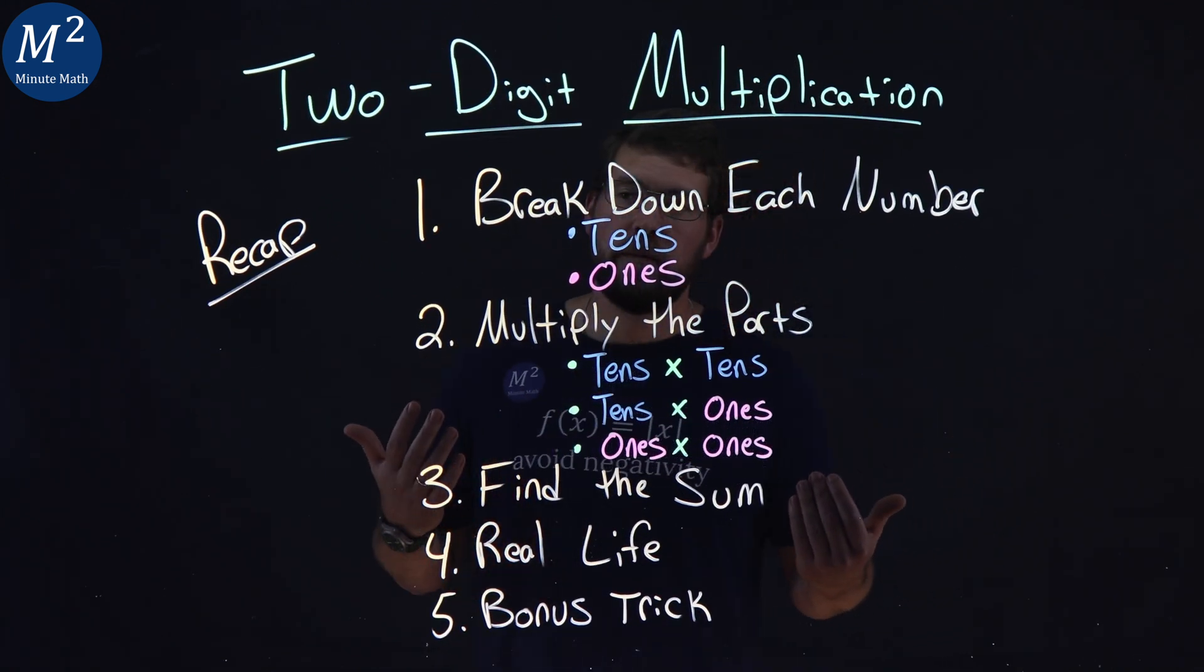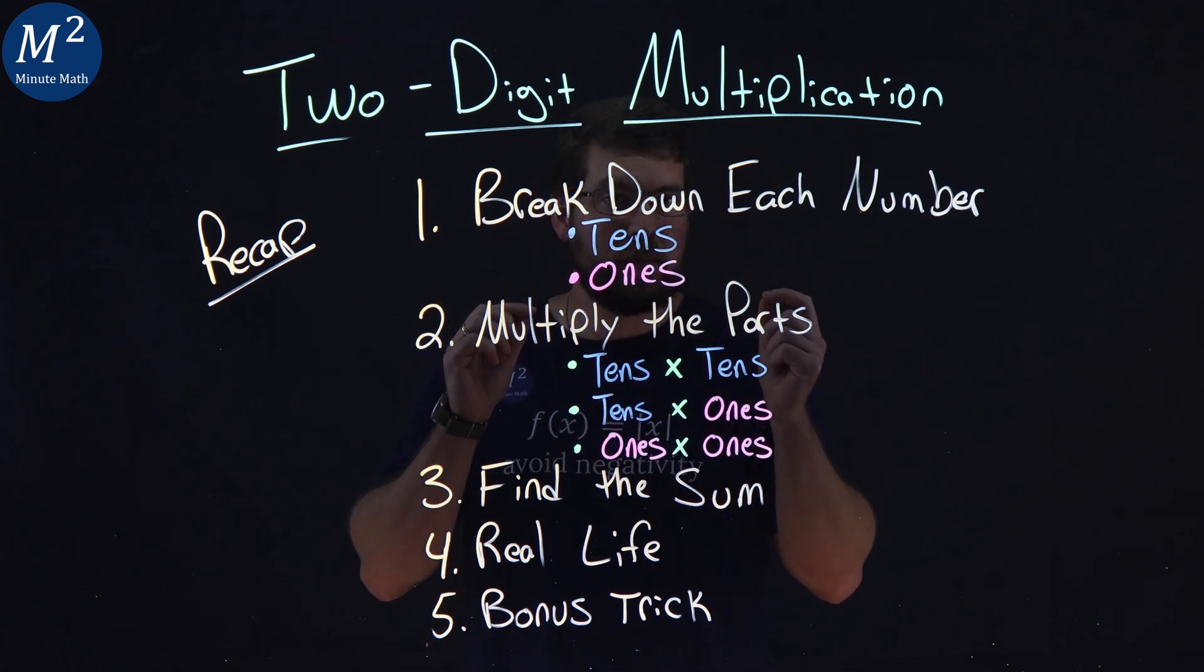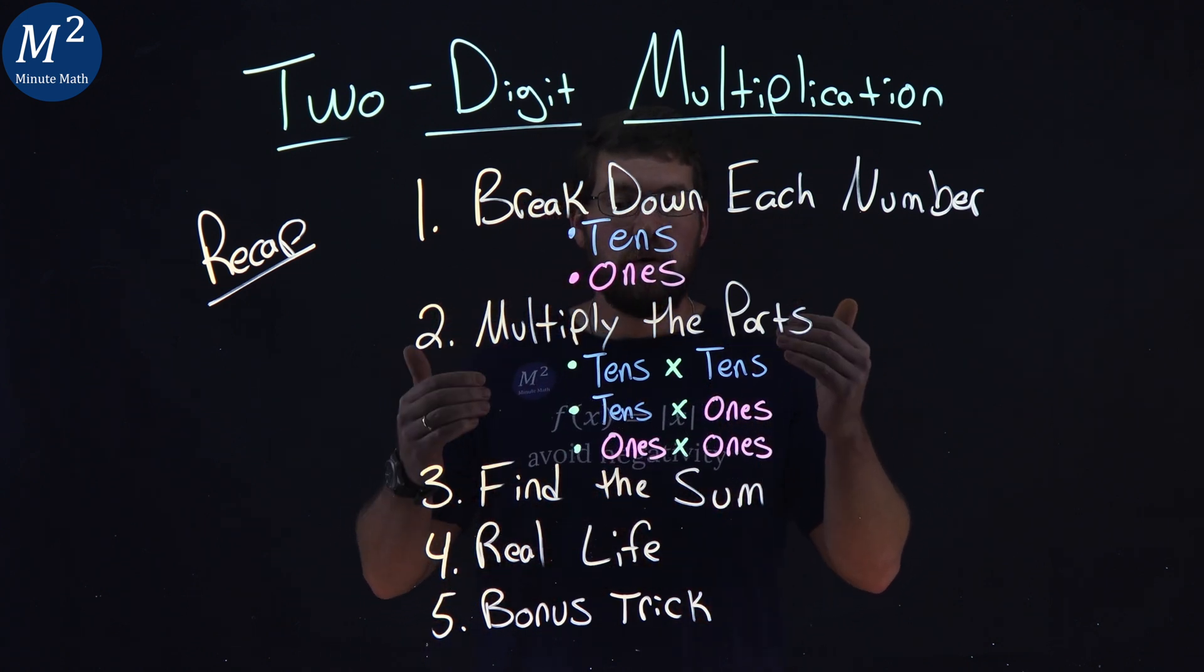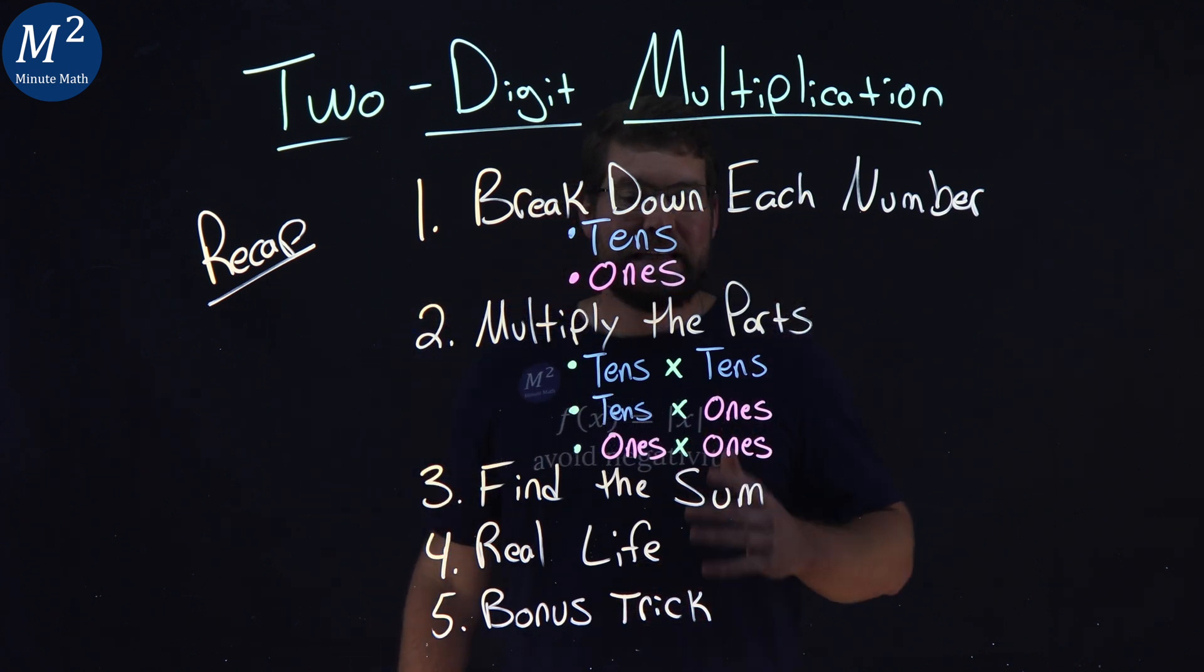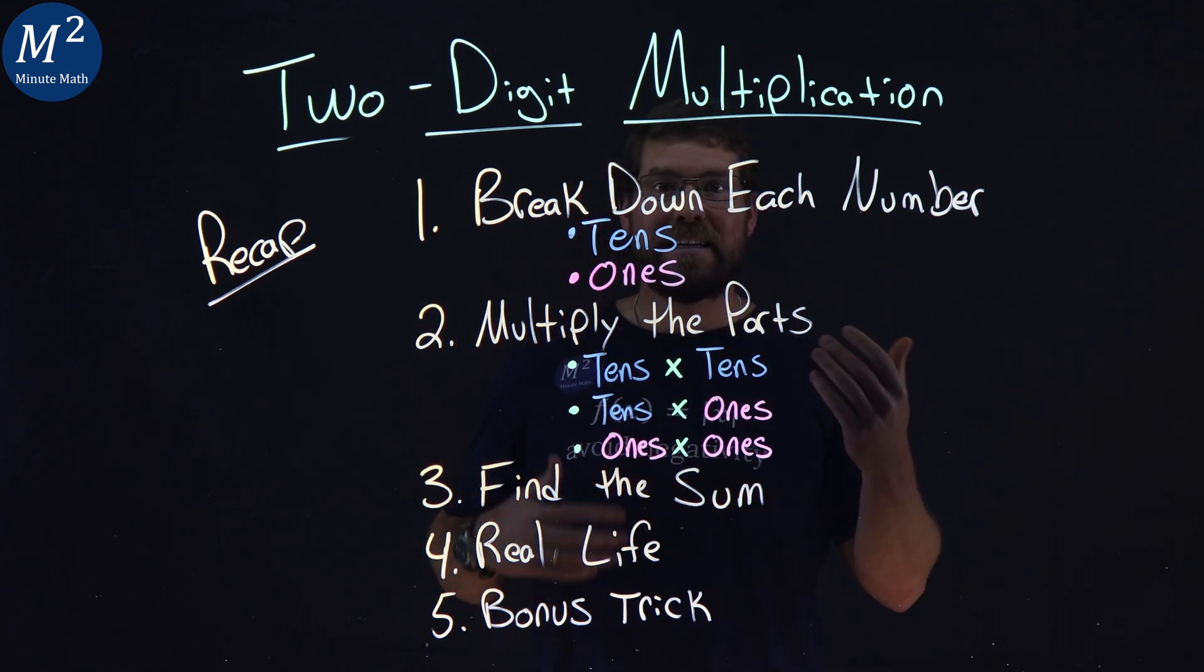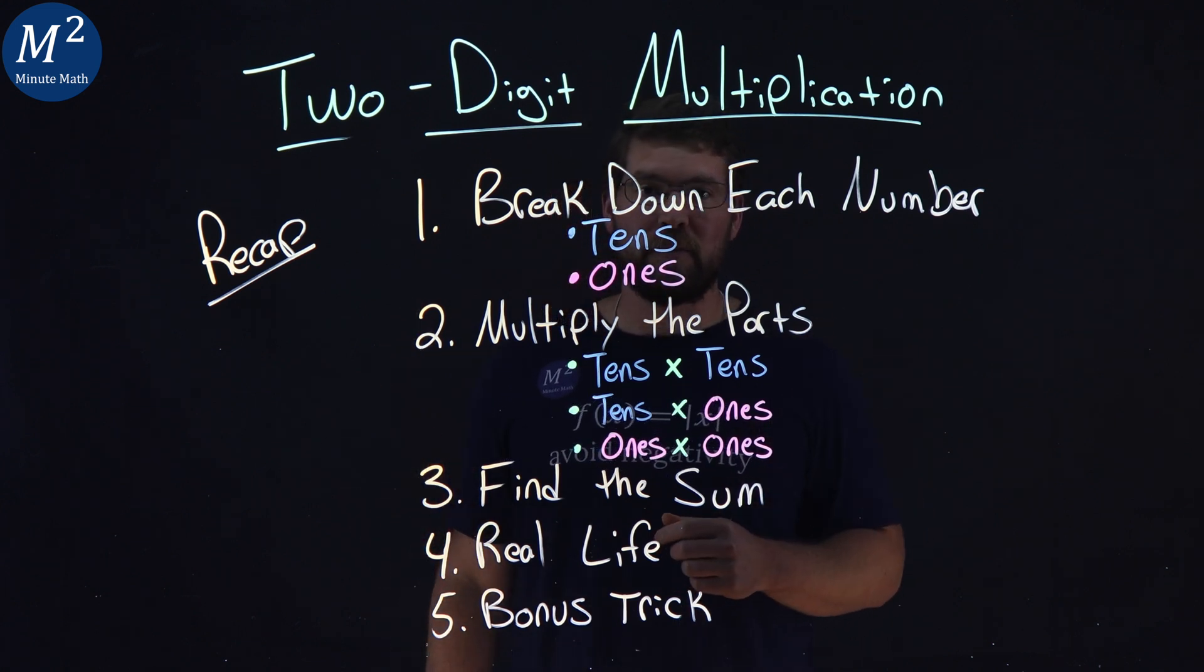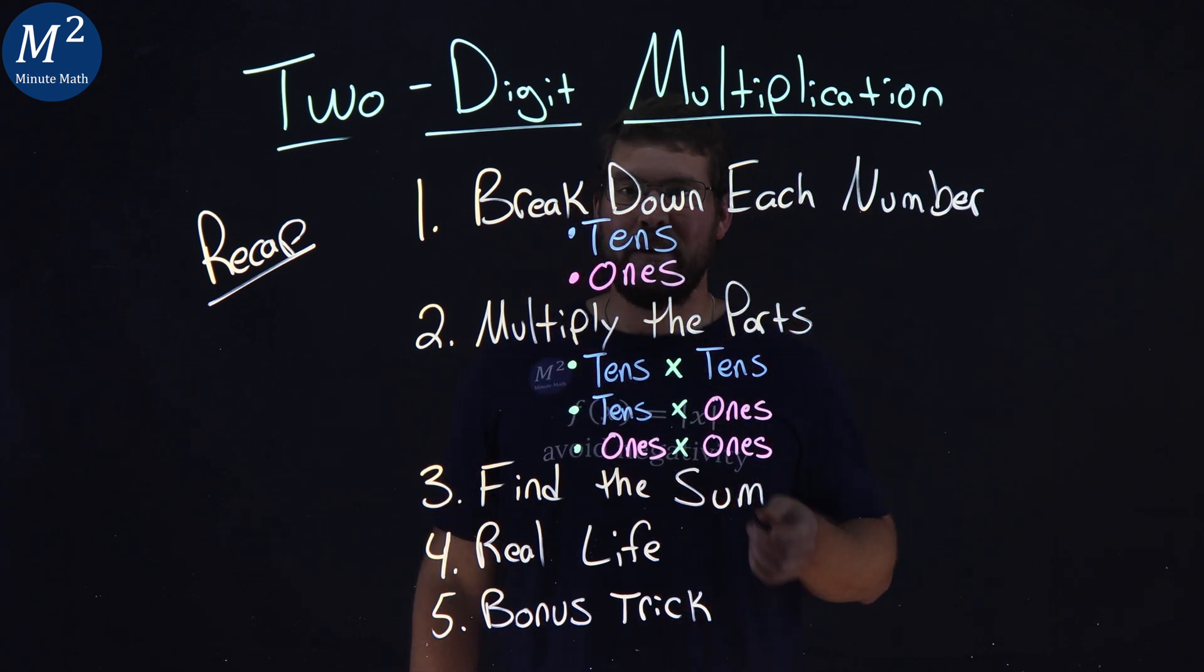Let's recap what we've learned. We multiplied two-digit numbers by grouping. We broke down each number into the tens and ones place. Then we multiplied the parts. We multiply the tens parts by the tens, the tens by the ones, and the ones by the ones. All of those products we added together to find the sum, which gave us our answer. We also applied this to the real world. We found a real-world scenario where we can multiply two-digit numbers together to get an answer and then how that could help us solve the total cost problem. And lastly, we learned a bonus trick here on multiplying these two-digit numbers. I hope you learned something and are now confident in multiplying two-digit numbers. Thanks for watching and Happy Multiplication!